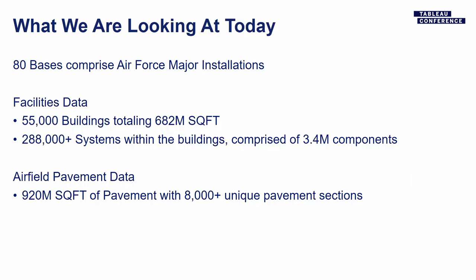So here's what we're looking at today: there are 80 major Air Force installations. In those 80 installations, there are about 55,000 buildings. Within those buildings there are systems — HVAC, electrical, plumbing, roof, foundation, walls. There are 288,000 different systems in all those buildings, and all those systems are made up of components, like the compressor on an AC unit. So we're looking at 3.4 million data points, and for airfield pavement data, about 920 million square feet of pavement. How do we show all this data in a single visual? Let's jump over to Tableau.